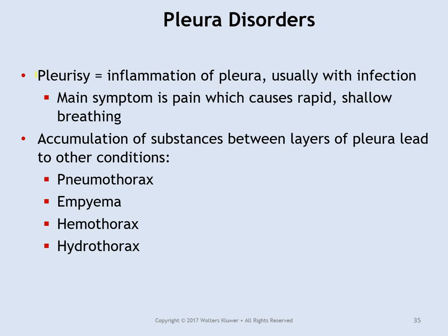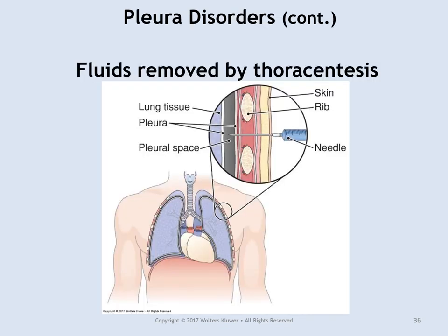Pleurisy is usually caused by an infection that sets in affecting the pleura, the coverings of the lungs. The pain can be very severe with every breath because when the covering of the lungs is inflamed, every breath causes it to press on the nerves between the two layers. The pleural space can have other conditions called pneumothorax, hemothorax, and hydrothorax.